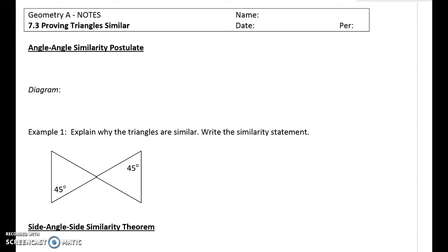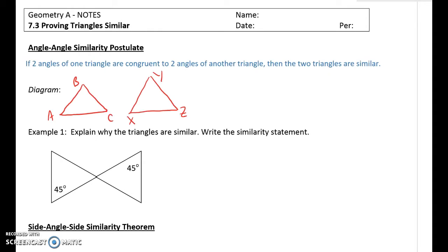The first is angle-angle similarity and it states exactly what we need to know. Basically, two angles of our triangles need to be congruent, then we've got similar triangles. So let's go ahead and write that down. If two angles of one triangle are congruent to two angles of another triangle, then the two triangles are similar.